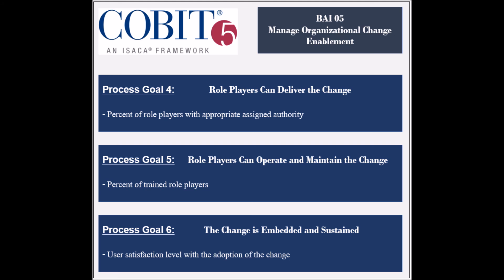The fifth goal is to ensure that role players are able to operate and maintain the change, and its achievement is measured by the percent of trained role players. The sixth and last process goal is to ensure that the change is sustained, and its achievement is measured by the users' satisfaction level with the adoption of change.